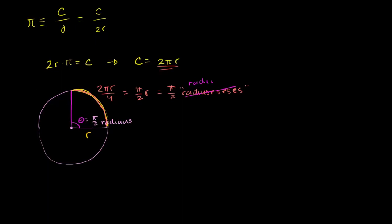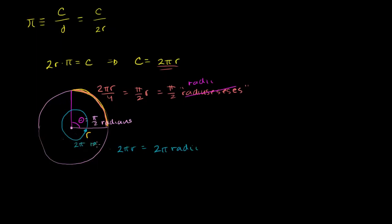If you went all the way around the circle and got back to the positive x-axis, what is the arc length? Now the arc length is the entire circumference of the circle — it would be 2 pi r, which is the same thing as 2 pi radii. And we would say the angle subtended going all the way around the circle is 2 pi radians.